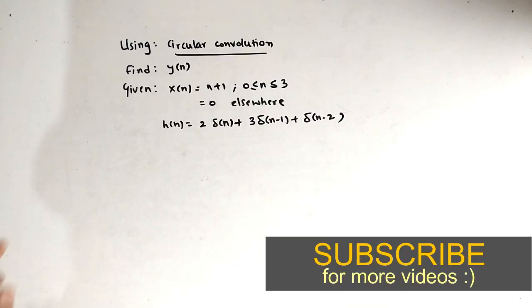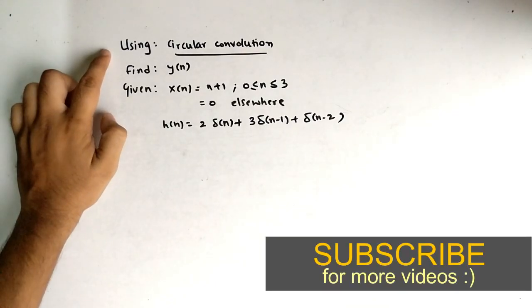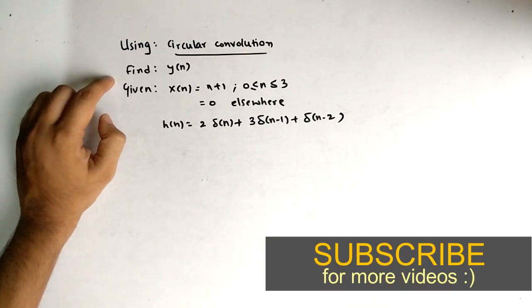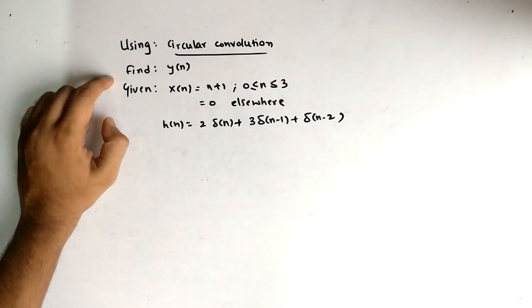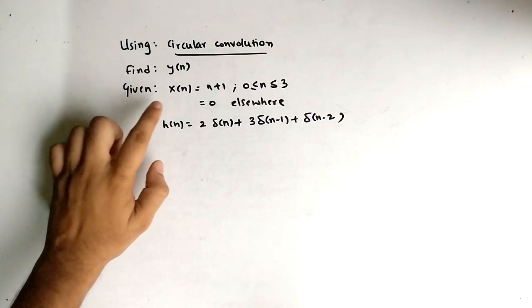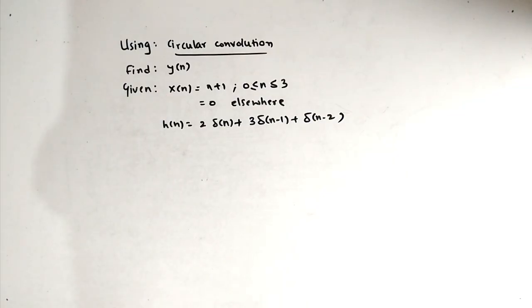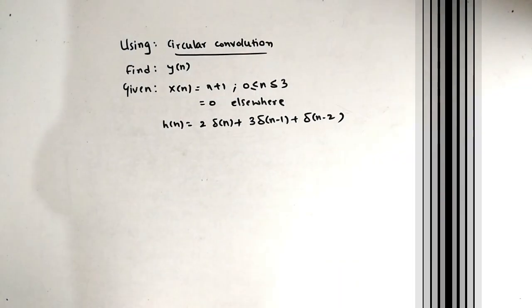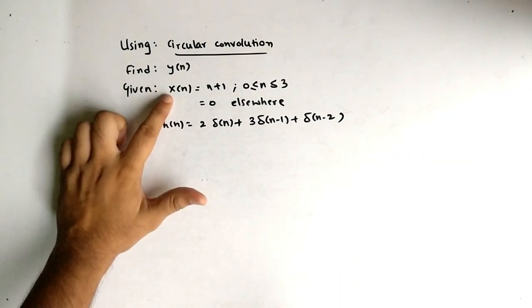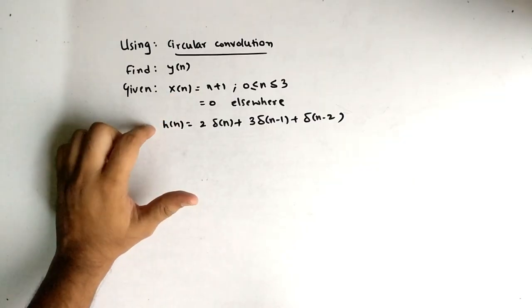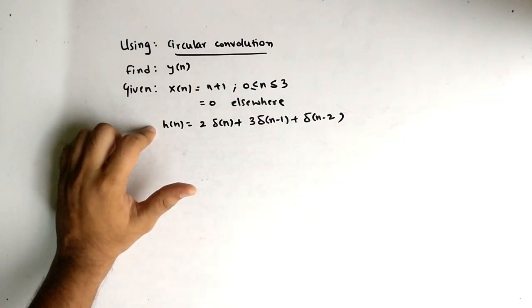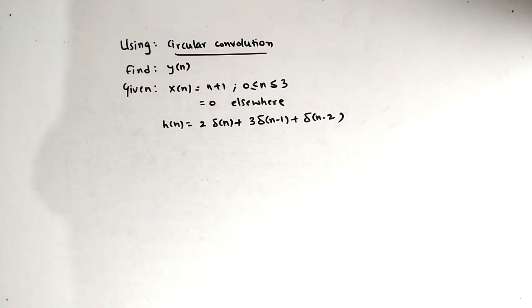Hello friends, in this video we will see circular convolution. We have to find y, given x and h, where x is the input signal and h is the impulse response.